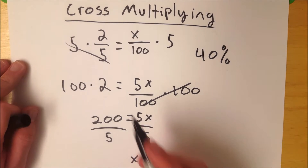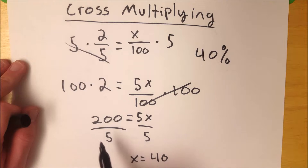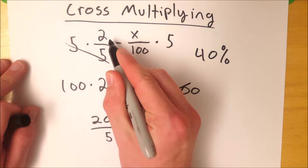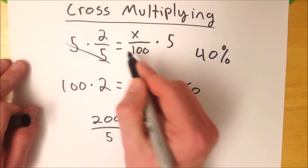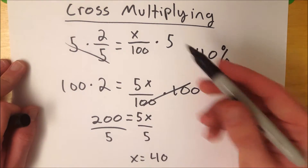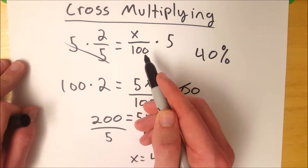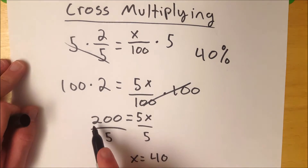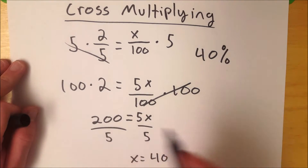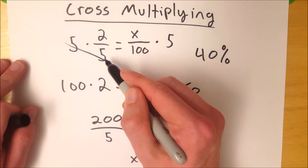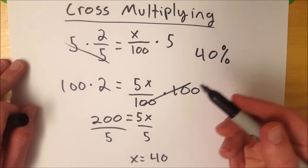So we know that 2 is 40 percent of 5. You can see the shortcut way of getting to the step 200 equals 5x is to cross-multiply, which is multiplying the diagonal of the proportion. It's the numerator multiplied by the denominator — 2 times 100, which gives us 200 — set equal to this numerator times this denominator, which is 5x.